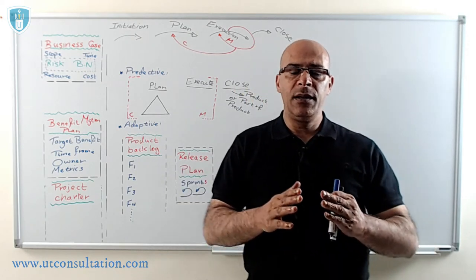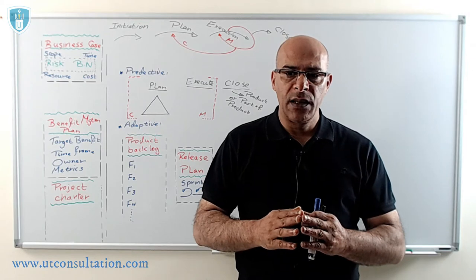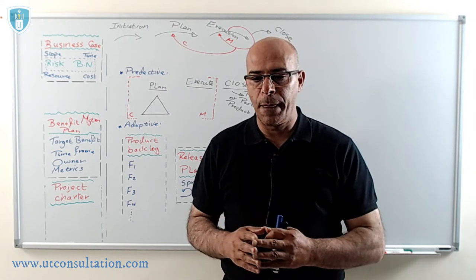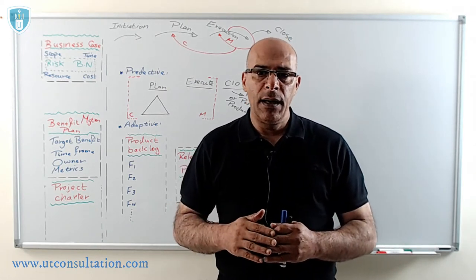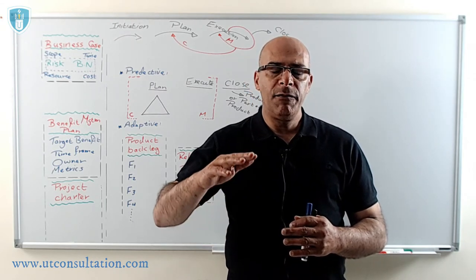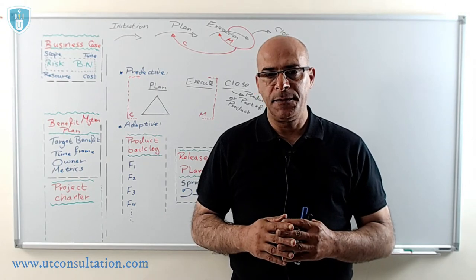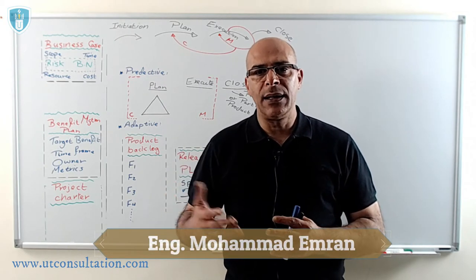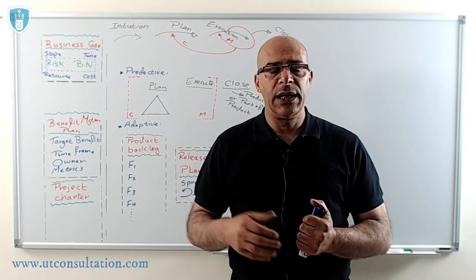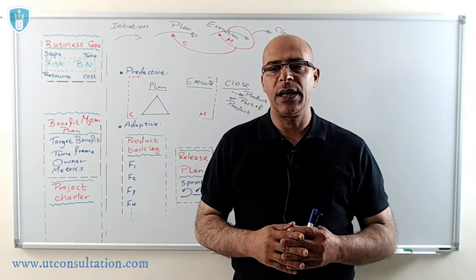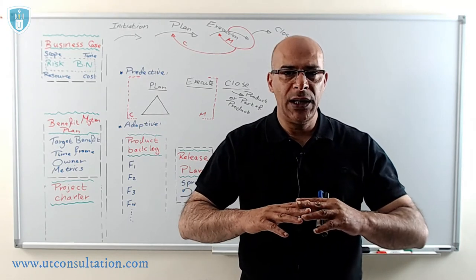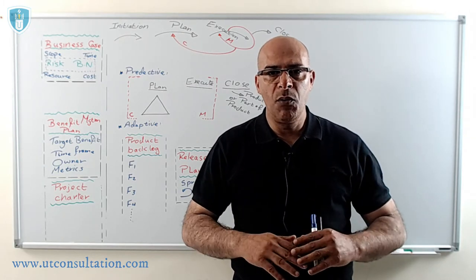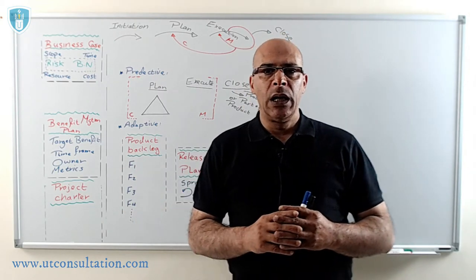Therefore, there are different workflows to manage projects, different templates, different tools and techniques and so on. There are five common methodologies: the first is called predictive life cycle, the second is called incremental life cycle, then there is iterative life cycle, there is agile life cycle — and within agility there are more than 40 methods or approaches. Project management has many different methods.